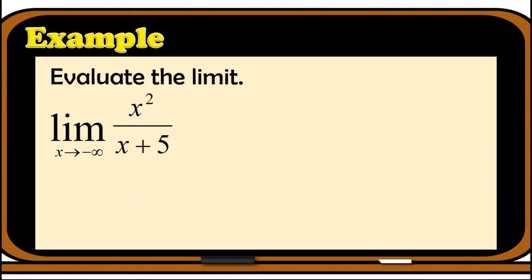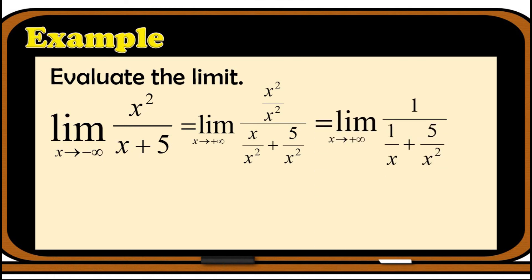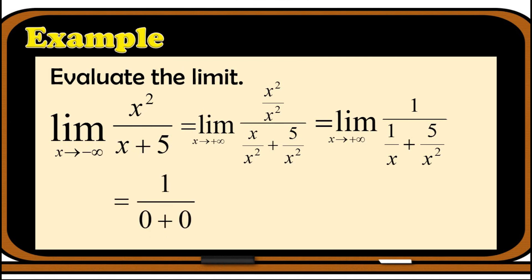For the fourth example: evaluate the limit of x²/(x + 5) as x approaches negative infinity. The highest exponent is x², so we divide every term by x², giving 1/(1/x + 5/x²). Applying the theorem, the numerator's limit is 1 and the denominator's limits are 0 + 0, giving 1/0. Applying infinite limits: since the numerator is positive and we approach negative infinity, positive divided by negative gives negative infinity.